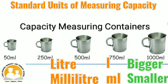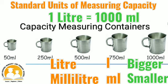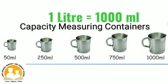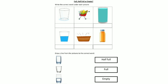Look at the different capacity measuring containers shown in the images. Starting from 50 ml, 250 ml, 500 ml, 750 ml, and 1000 ml. 1000 ml is nothing but 1 liter. 1 liter is equal to 1000 ml.